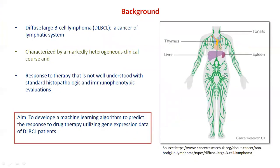Let us first understand diffuse large B-cell lymphoma. DLBCL is a cancer of the lymphatic system and constitutes 30% of all cases of non-Hodgkin's lymphoma. It is characterized by a markedly heterogeneous clinical course, and the response to therapy is not well appreciated with standard histopathological and immunophenotypic evaluations. Hence, there is a need to predict the therapeutic response of DLBCL and develop more precise therapeutic regimens.